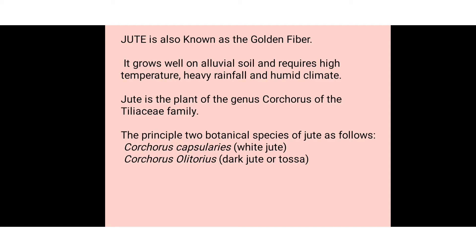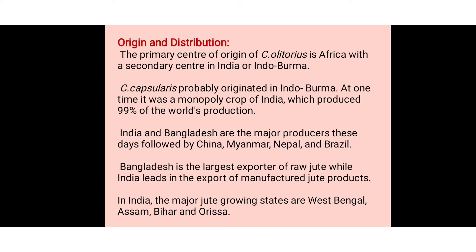The two principal botanical species of jute most often cultivated are Corchorus capsularis, whose common name is white jute, and Corchorus olitorius, known as dark jute or tosa.